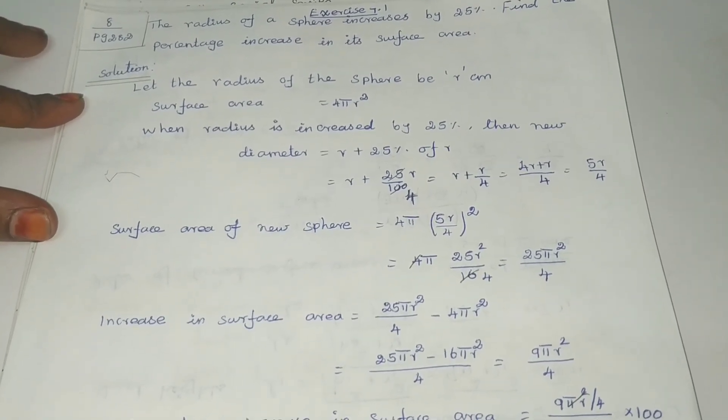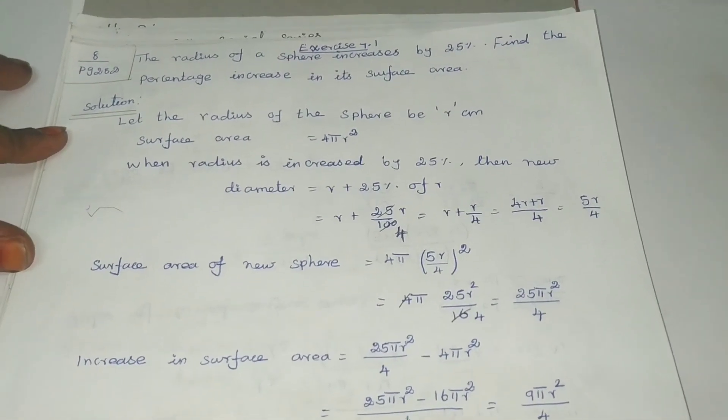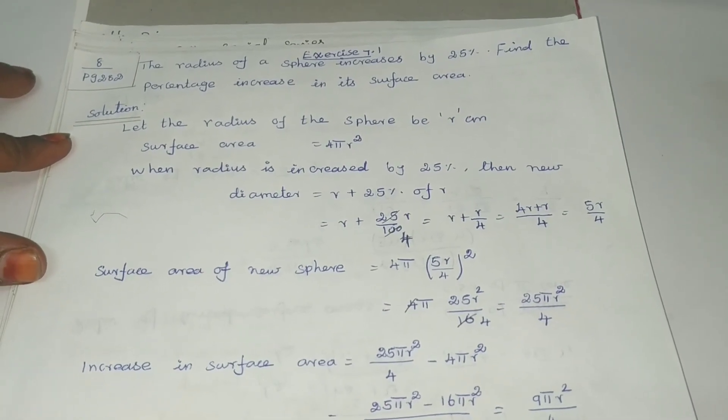The radius of a sphere increases by 25%. Find the percentage increase in its surface area. The solution: let the radius of sphere 1 be R.